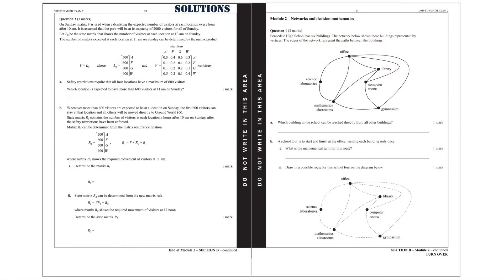Module 2, Networks and Decision Mathematics, Question 1. Vansdale High School has 6 buildings. The network below shows these buildings represented by vertices. The edges of the network represent the paths between the buildings.